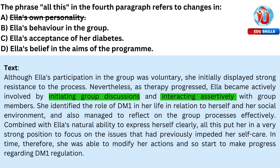Option C, Ella's acceptance of her diabetes: although she identifies DM1's role in her life, there's no emphasis on acceptance as the primary factor. Option D, Ella's belief in the aims of the program: the text does not mention anything about Ella's belief in the program's objectives.